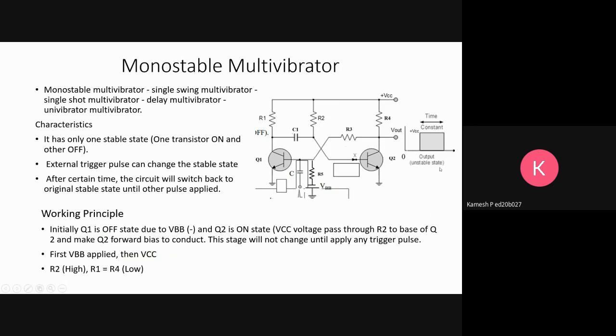Working principle: initially Q1 is off due to VBB negative, and Q2 is in on state. VCC voltage passes through R2 to the base of Q2, which is forward biased to conduct. This stage will not change until any trigger pulse is applied.